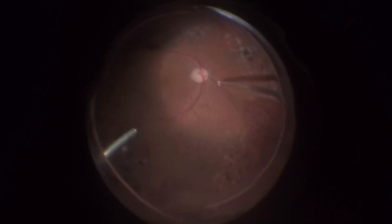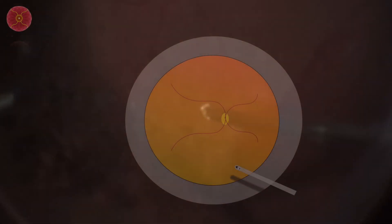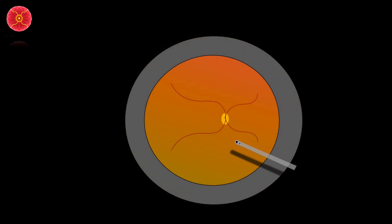A good parameter to improve the notion of depth during maneuvers in which we have to get very close to the retina is to pay attention to the shadow of the instrument. Note that the closer you are to the retina, the shorter the distance between the tip of your instrument and its shadow.